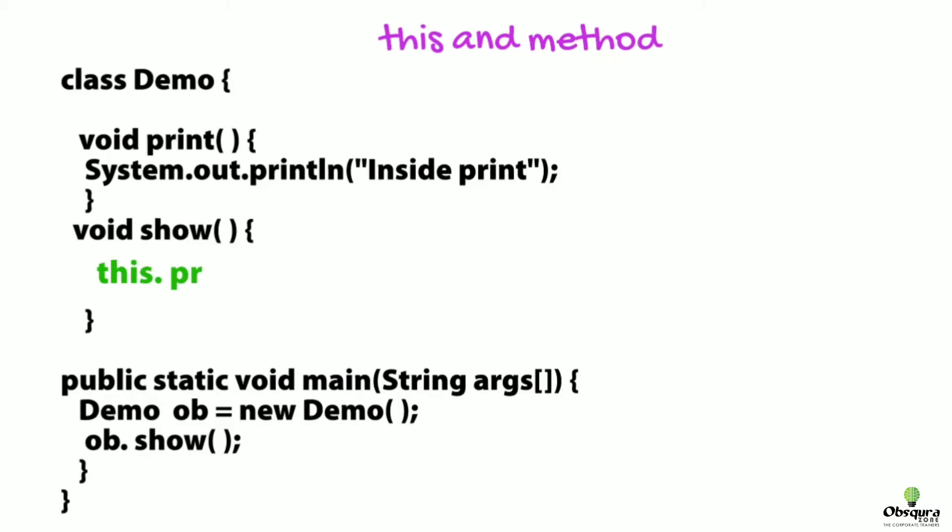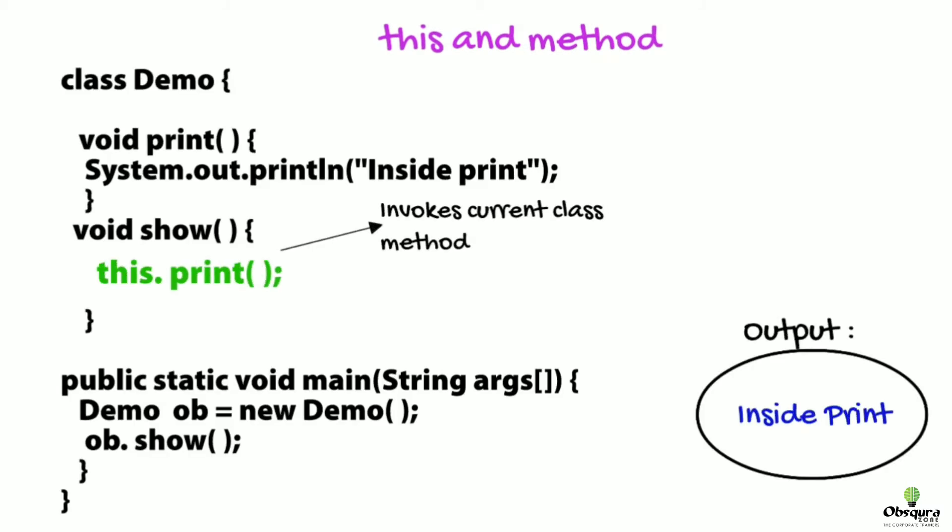Now let's see how this keyword plays an important role in invoking current class instance method. As seen in the example, we have two methods, show and print. The print method is invoked using this keyword. Interestingly, even if we do not use this keyword, the compiler would automatically add it while invoking the print method.